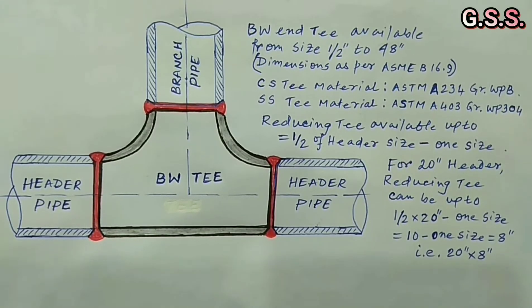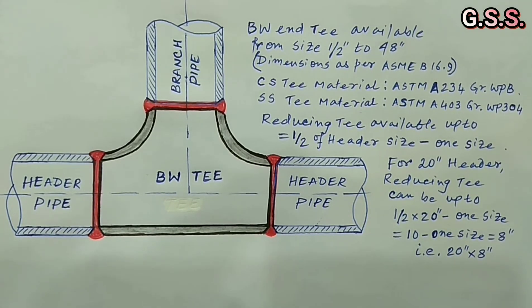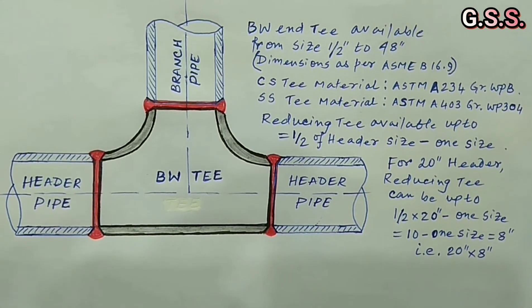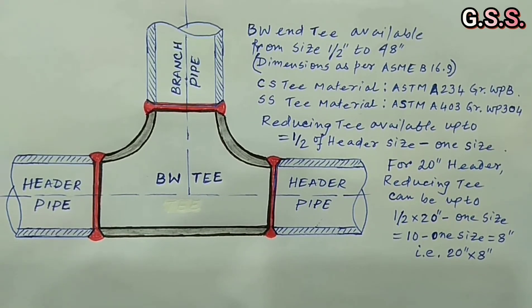If header pipe is of seamless construction, then T should be of seamless construction. If header pipe is of welded construction, then T should be of seamless type or welded type, that means pressed and welded type.